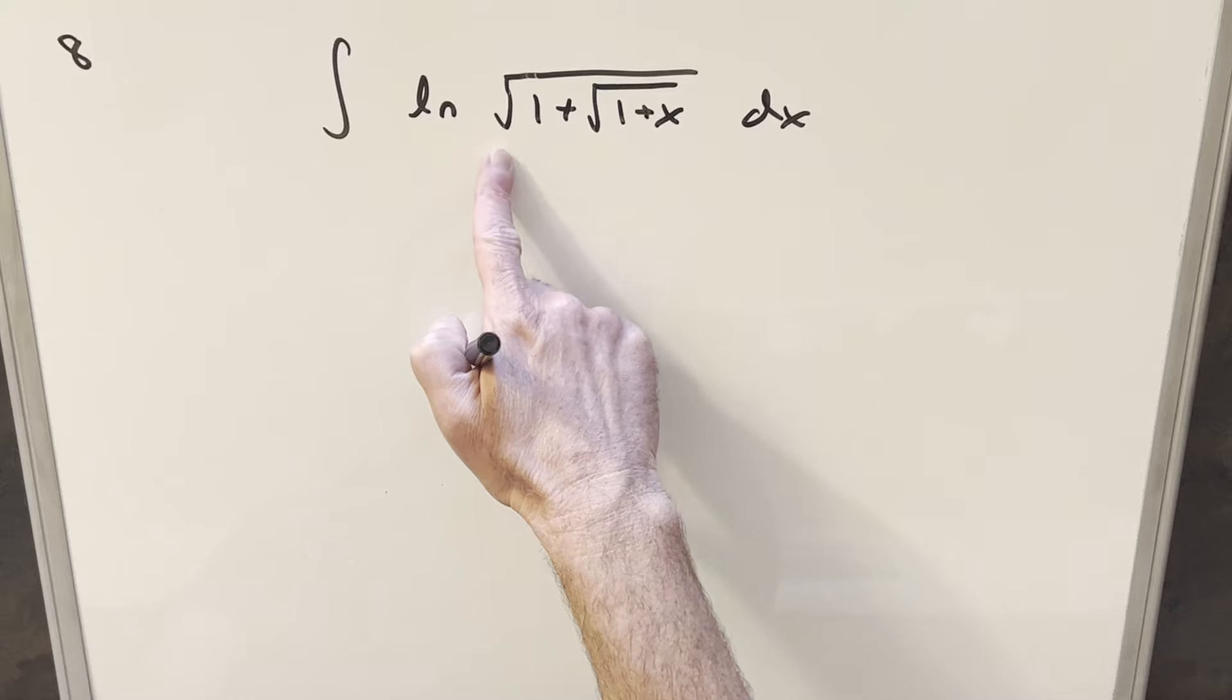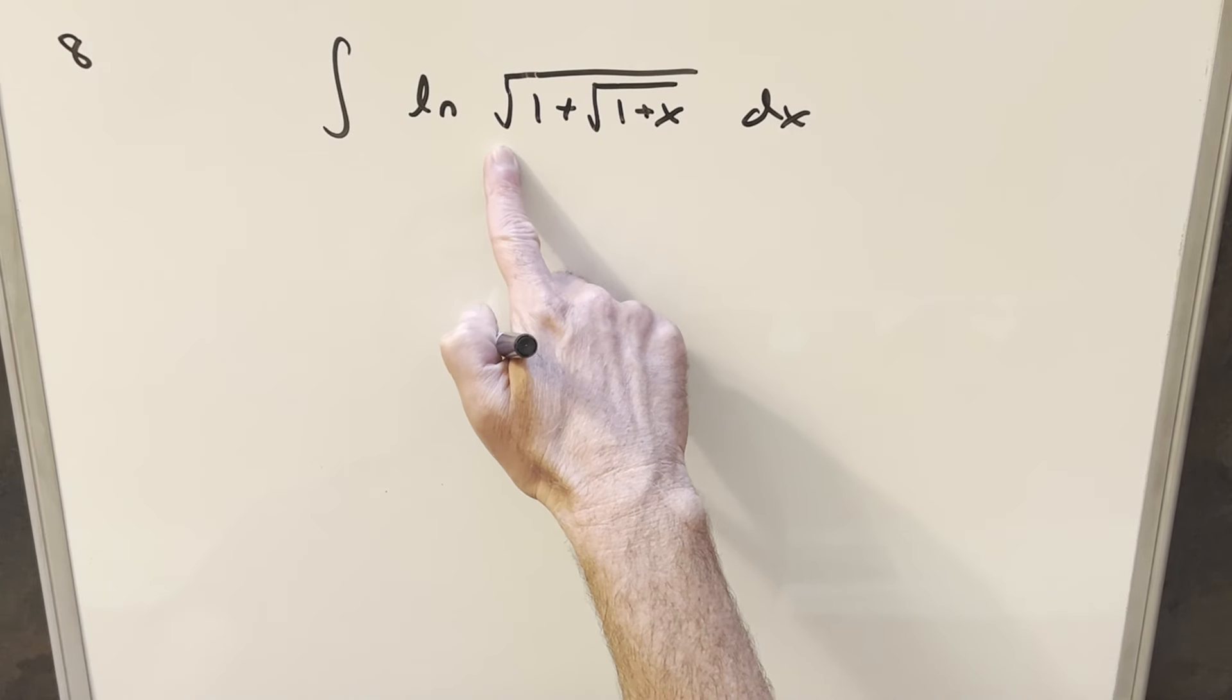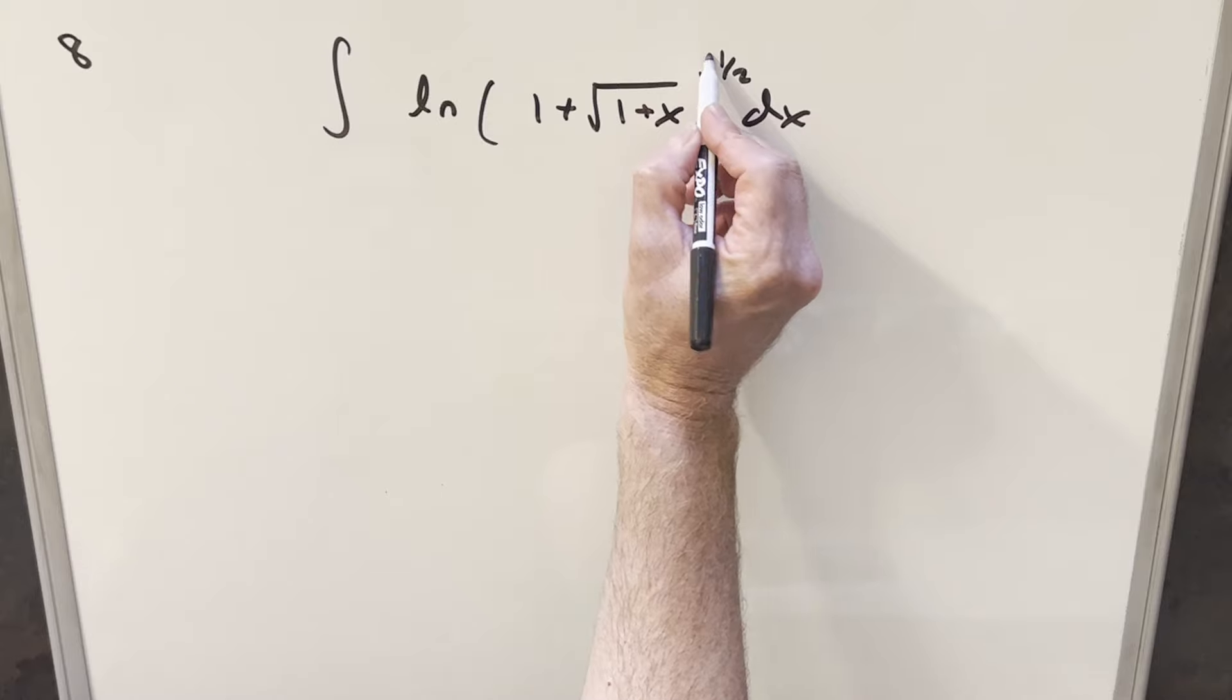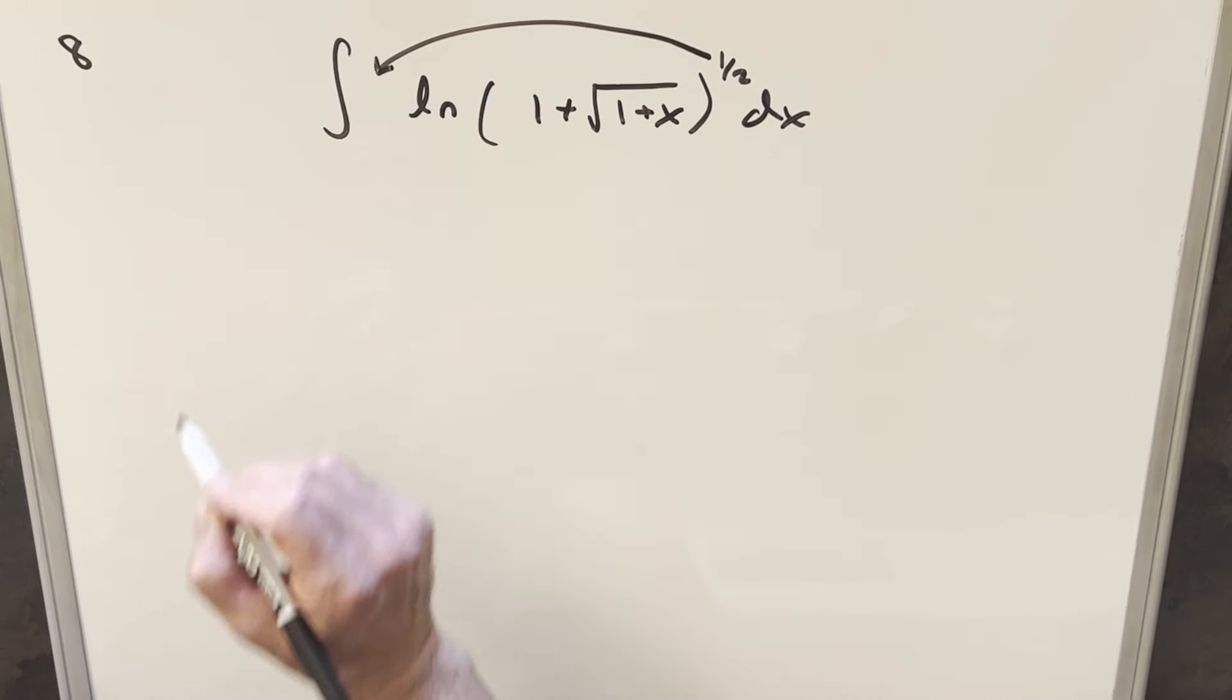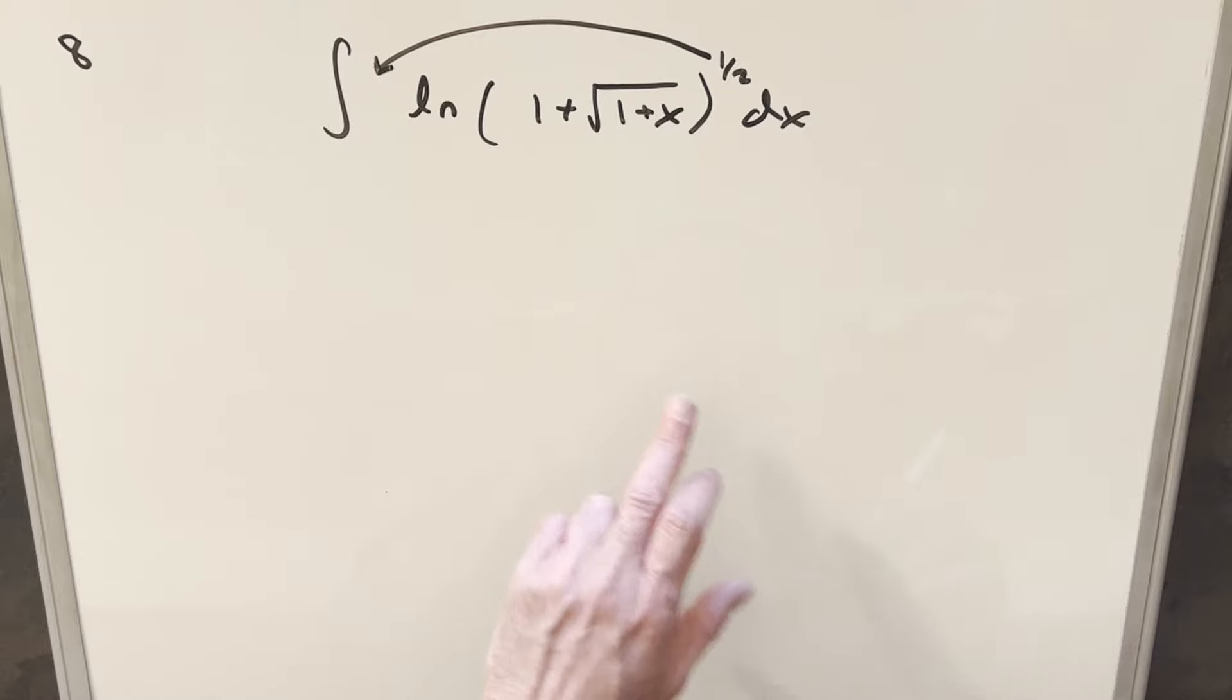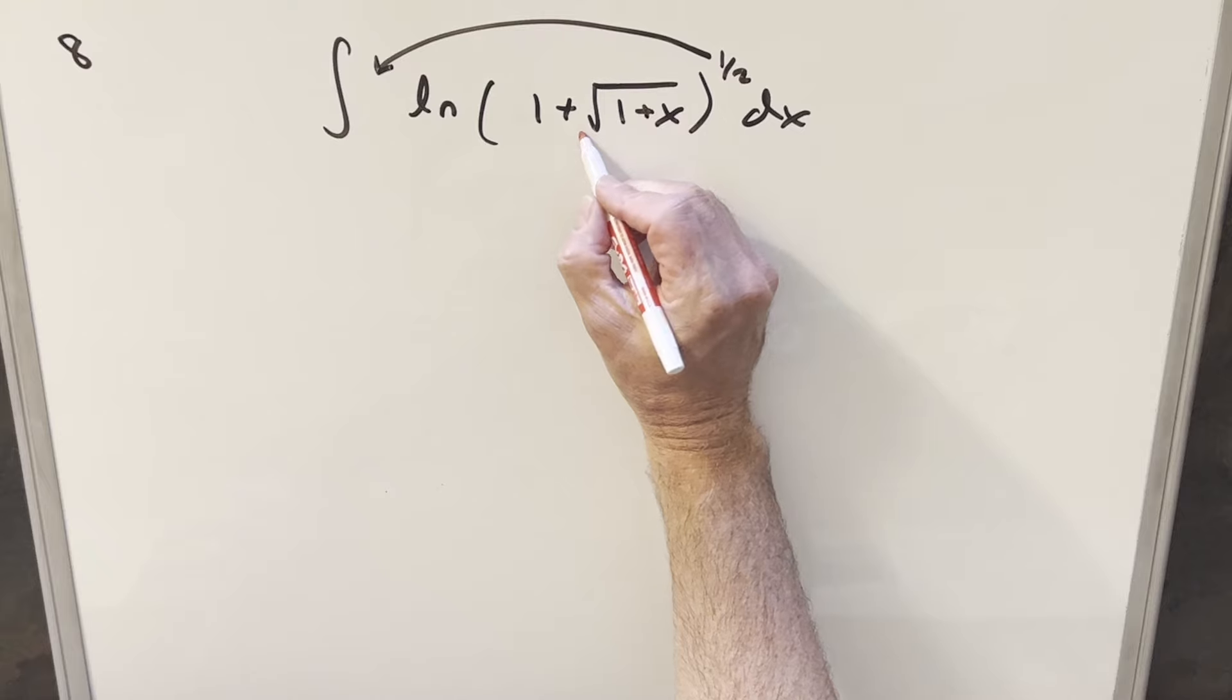One thing we can notice here, the square root here around everything, I can actually write this as a 1 half power. And then doing that with log properties, I can just take the 1 half out front like that. I don't think we really need to do this, but this is just going to help me kind of clean it up.